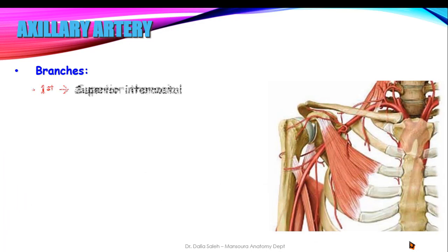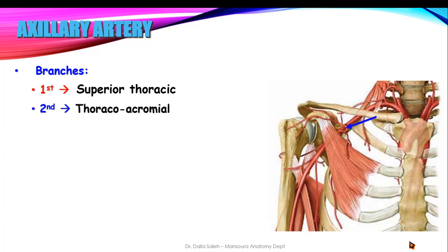From the first part we have one branch called the superior thoracic artery. From the second part we have two branches: one is called the thoracoacromial artery, which divides into four branches — pectoral, deltoid, acromial, and clavicular — and another branch called the lateral thoracic artery, which is an important source supplying the lateral part of the mammary gland.